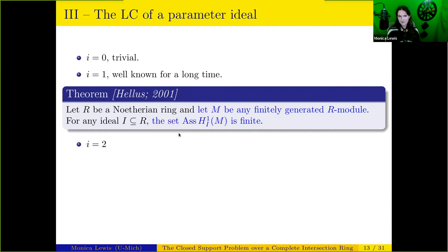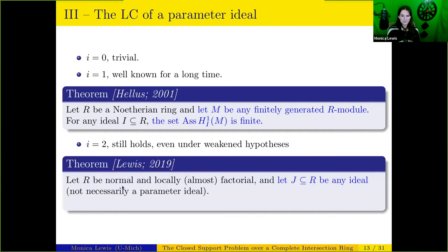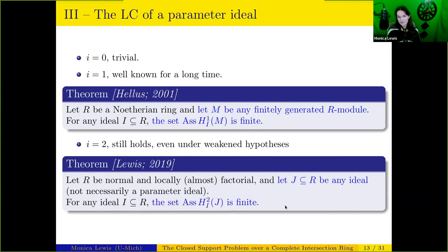Degrees zero and one are under control. The first new result for the i=2 setting gives a positive answer even under weaker hypotheses. For R a normal and locally almost factorial ring — you can think of it as locally factorial if you prefer, and a regular ring is normal and locally almost factorial — and J any ideal, not necessarily a parameter ideal, and any ideal I: the set of associated primes of H^2_I(J) is finite.